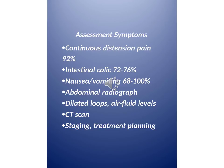Assessment — symptoms: continuous distension pain in 92%, intestinal colic in 72–76%, nausea and vomiting in 68–100%. Abdominal radiograph shows dilated loops and air-fluid levels. CT scan used for staging and treatment planning.